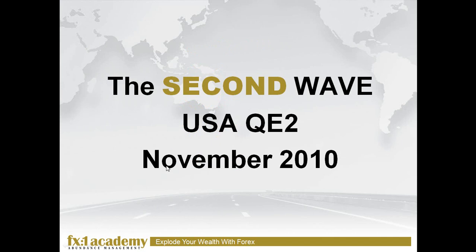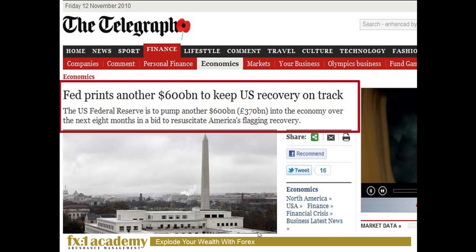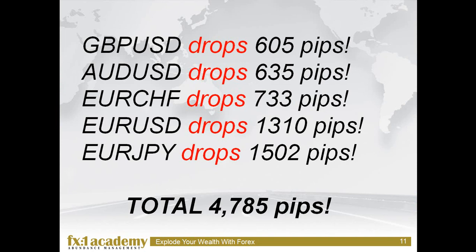The second wave happened in November 2010, when the United States announced a second round of quantitative easing, or what they term QE2. The Fed printed an additional 600 billion US dollars to keep the US recovery on track. As with the first wave, this was interpreted as fear and panic in the financial markets. We saw the pound-dollar drop over 600 pips, the Aussie dollar dropped 635, the Euro-Swiss dropped 733 pips, the euro-dollar dropped 1,310, and the euro-yen dropped 1,502 pips — a total of about 4,785 pips. If you had just played one lot at US$10 per pip, you could have netted a cool US$47,000 just on these five currency pairs in November last year.